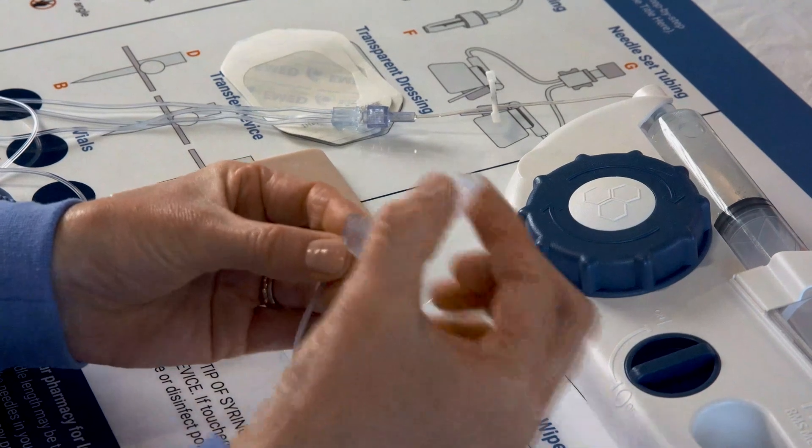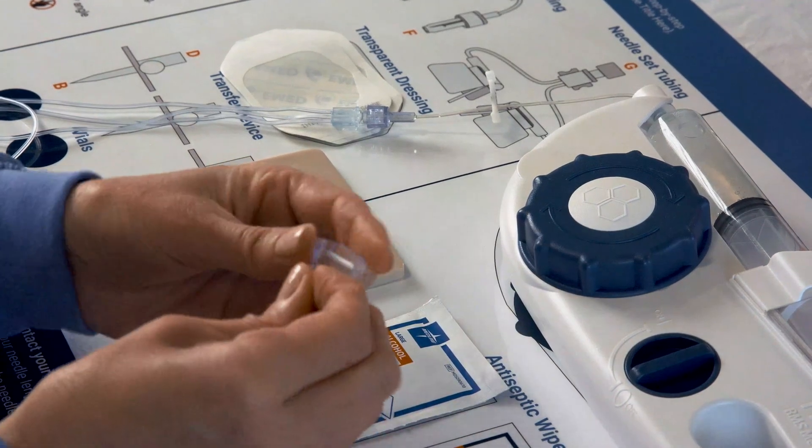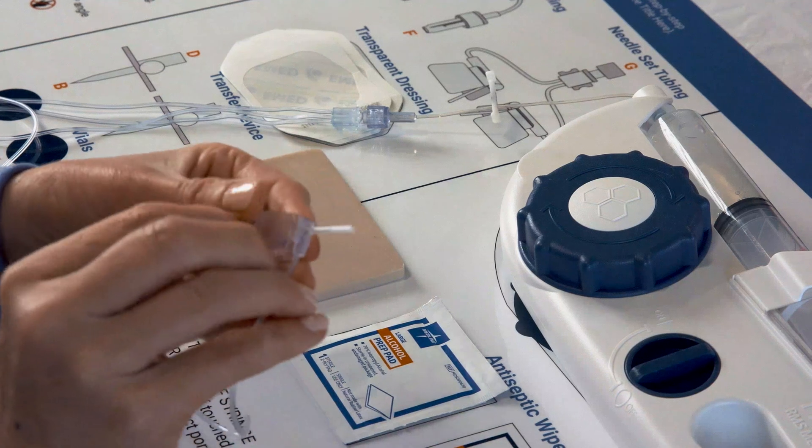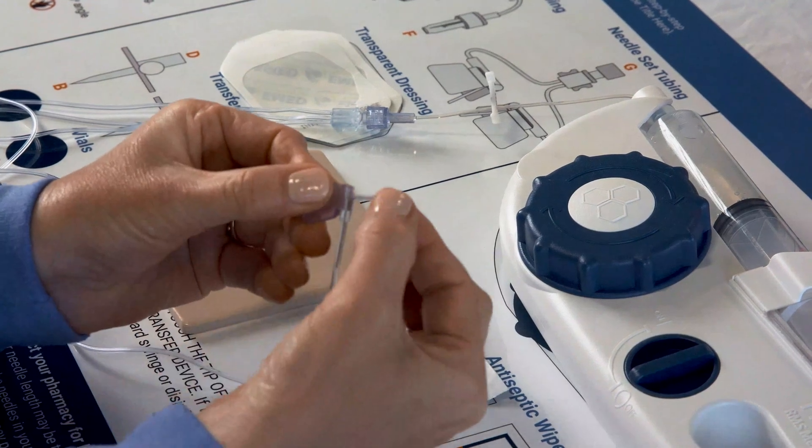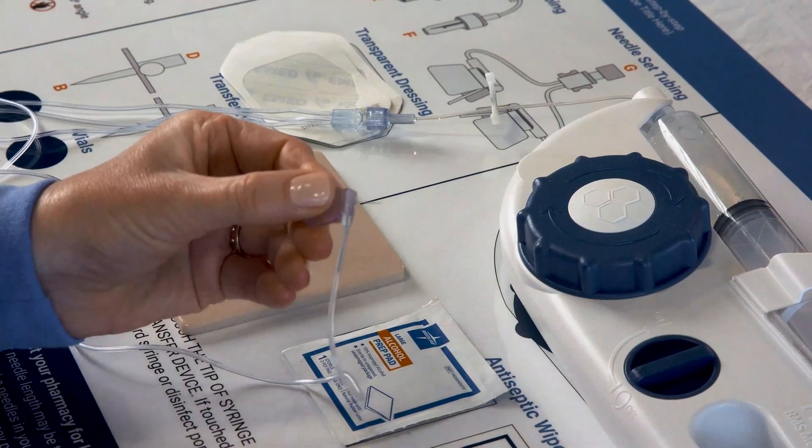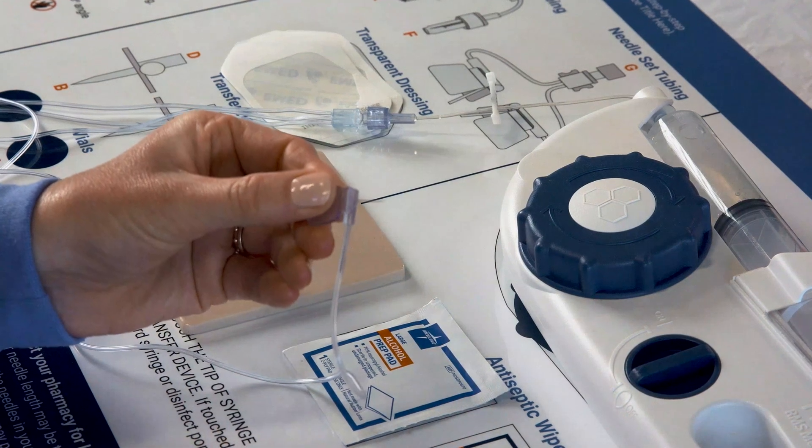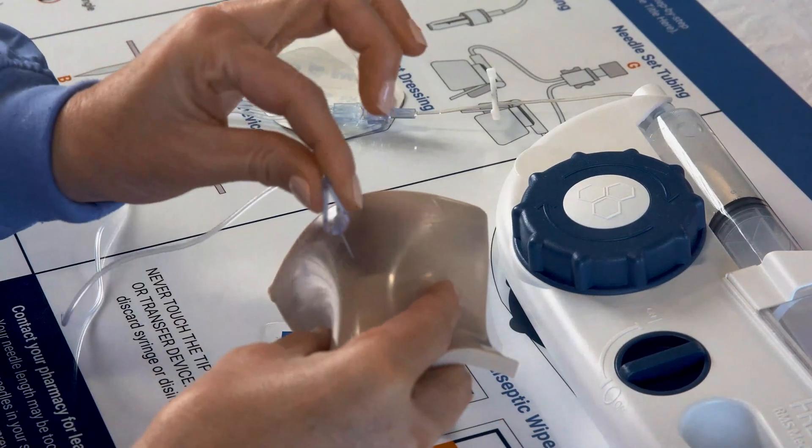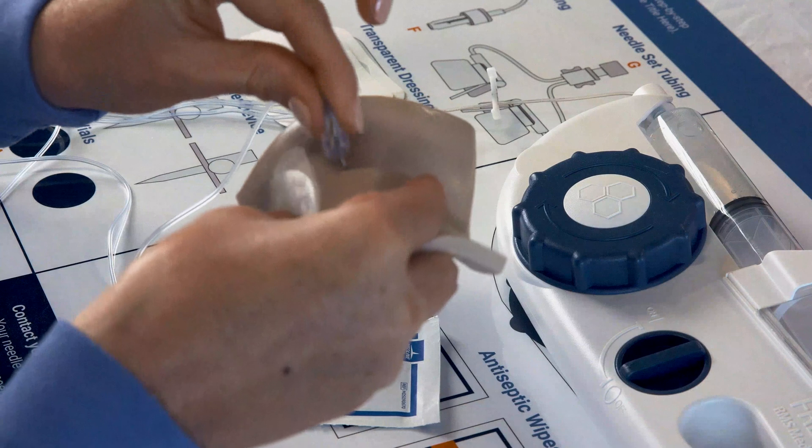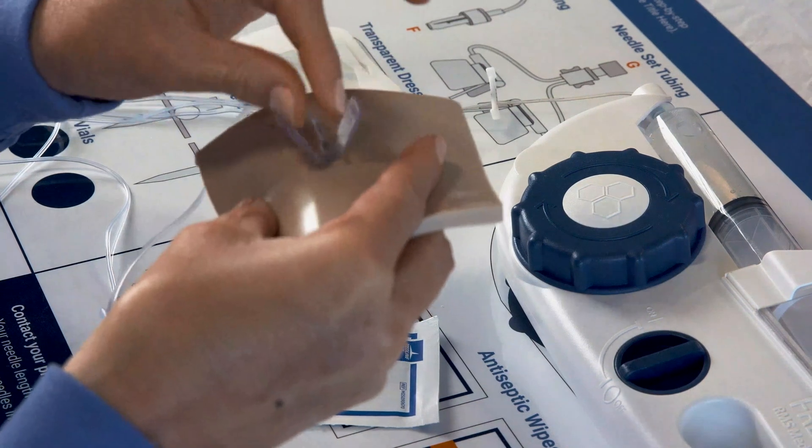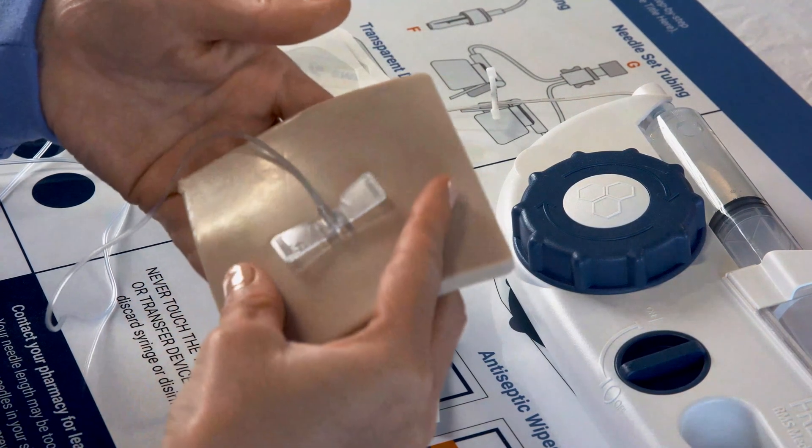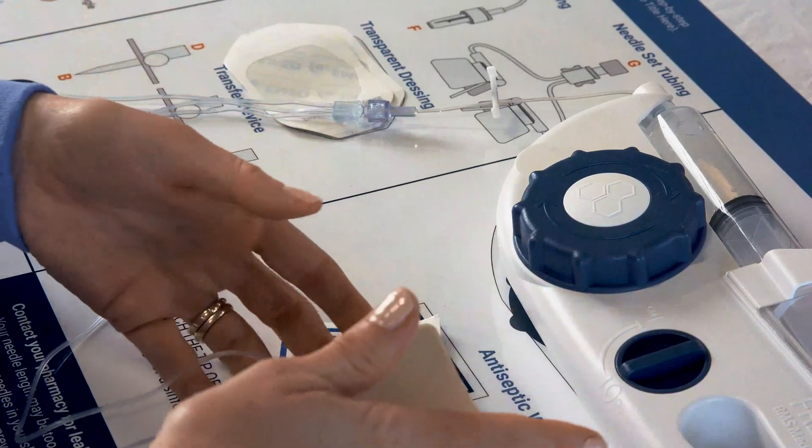Remove the needle guards and then pinch your skin without touching the insertion site, and insert the needle at a 90 degree angle into your skin. The tip of the needle will be in your fatty tissue.